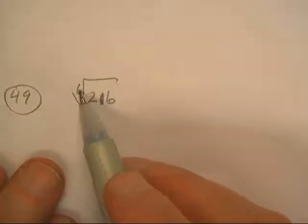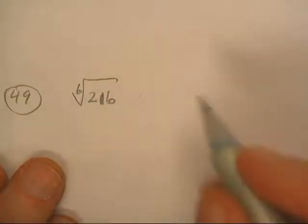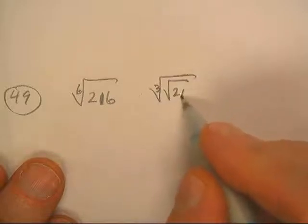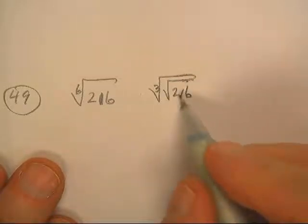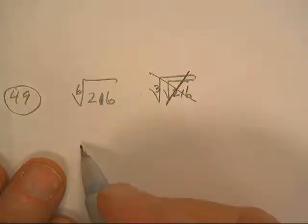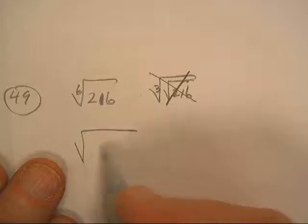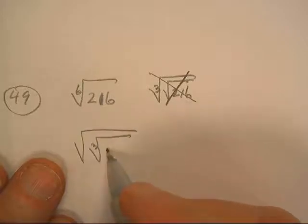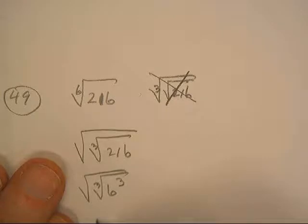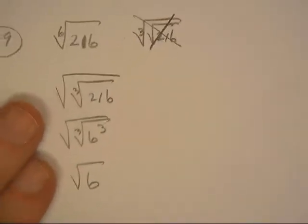We have the sixth root, so I either need to do the cube root of the square root of 216, but 216 is not a perfect square, or I do the square root of the cube root of 216. Since 216 is 6 cubed, the answer would just be the square root of 6.